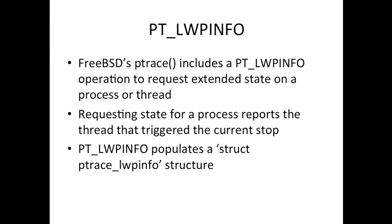FreeBSD has a ptrace request called PT_LWPINFO, added several years ago for thread debugging. Typically with ptrace, you don't get a lot of detailed information about a thread when it stops — you call wait and find out it stopped because of a trap or a signal. Different OSes handle this differently. PT_LWPINFO is a request to get more detailed state about a thread: why did you stop, what are you currently doing, what are auxiliary details about why you're stopped?